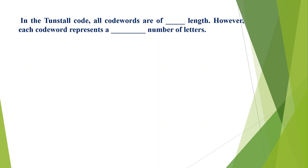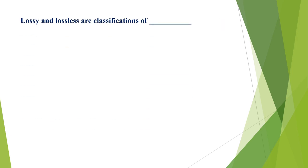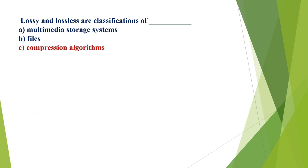In the Turnstall code, all codewords are of blank length; however, each codeword represents a blank number of letters. A) different, equal; B) equal, different; C) none of these. The correct option is B, equal length but different number of letters — all codewords are of equal length, however each codeword represents a different number of letters. Lossy and lossless are classifications of: A) multimedia storage system, B) files, C) compression algorithm, D) all of the mentioned. The correct option is C, compression algorithm.